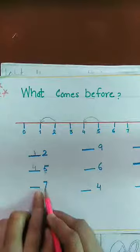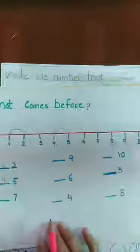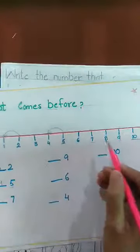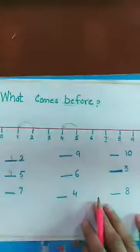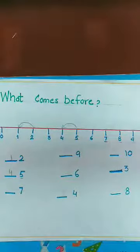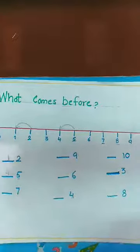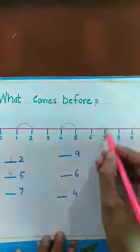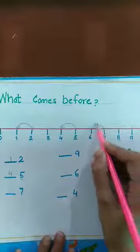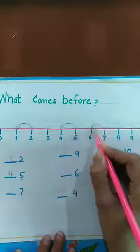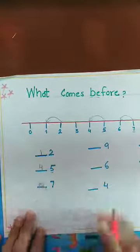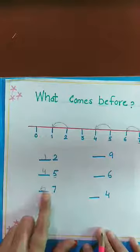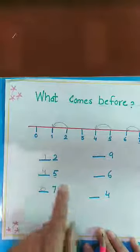Isi tarah, this is number seven. Toh hum yahan pe dhundenge — seven kidhar hai? This is seven. Before ka kya matlab hai? Pehle. Humne pehle wala number dekhna hai — koun sa number humare paas pehle aata hai? Now before number is six. What comes before seven? Six. Toh yahan pe hum kya likhenge? Six. Yeh humare before wale numbers thay.